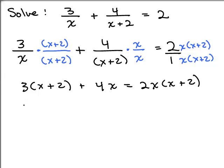We've got 3x plus 6 plus 4x equals 2x squared plus 4x. And by the way, if I would have made a mistake there, later when I checked my answer, I would have found out that it was wrong. So remember, if you do make a mistake, that's why it's important to always check your answers.